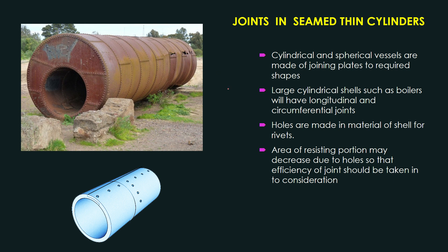So why should we provide joints, and what happens with the joints? In order to provide joints you have to connect with rivets, and to provide rivets you have to make holes in the material. The material is resisting the internal pressure — if you make holes, the area resisting the internal fluid pressure decreases, and that will definitely have an effect on the stresses developed: longitudinal and circumferential stresses.